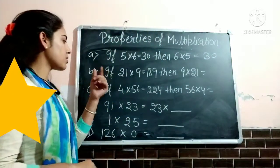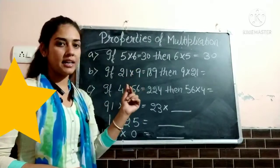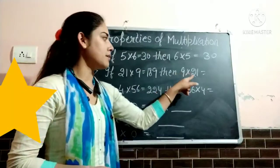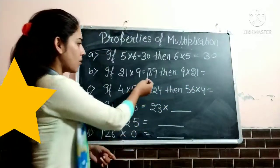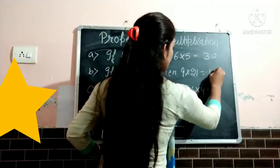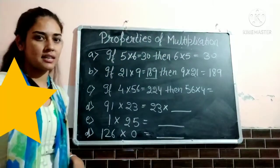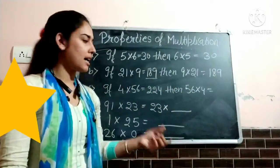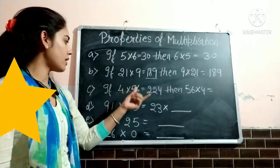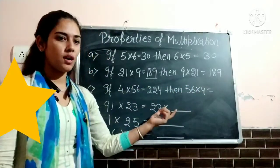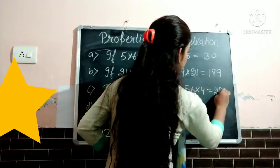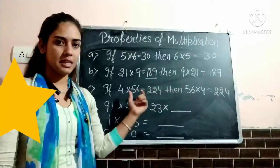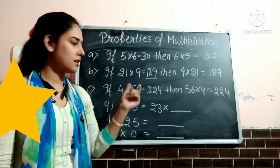Next question: if 21 multiply 9 is equal to 189, then 9 multiply 21 is equal to — here again only order changed, 21 multiply 9 and 9 multiply 21, so the product remains same: 189. Next question: if 4 multiply 56 is equal to 224, then 56 multiply 4 — here only order changed, so the product is the same: 224. No need to multiply in rough work, just compare and write the product.